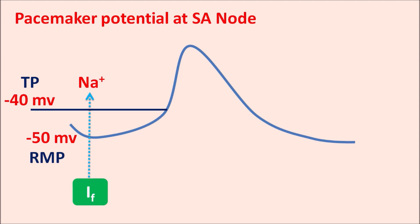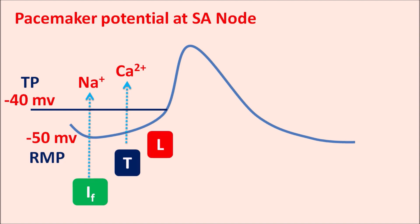The pacemaker potential is initiated by IF funny ion channels, which produce an inward sodium current and are activated by hyperpolarization of the membrane. The entry of sodium produces a small increase in membrane potential, followed by opening of T-type calcium channels producing a small calcium influx further raising the membrane potential. Finally, L-type calcium channels produce another influx of calcium ions, thereby producing depolarization. After depolarization, potassium channels open and membrane potential decreases to negative values.